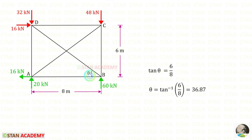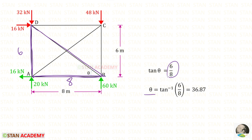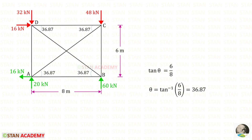We need to find this angle theta. Using the tan theta formula on the relevant triangle, tan theta equals opposite over adjacent, which is 6 over 8. So theta equals 36.87°. This same angle appears at all four relevant positions in the truss, so all are 36.87°.